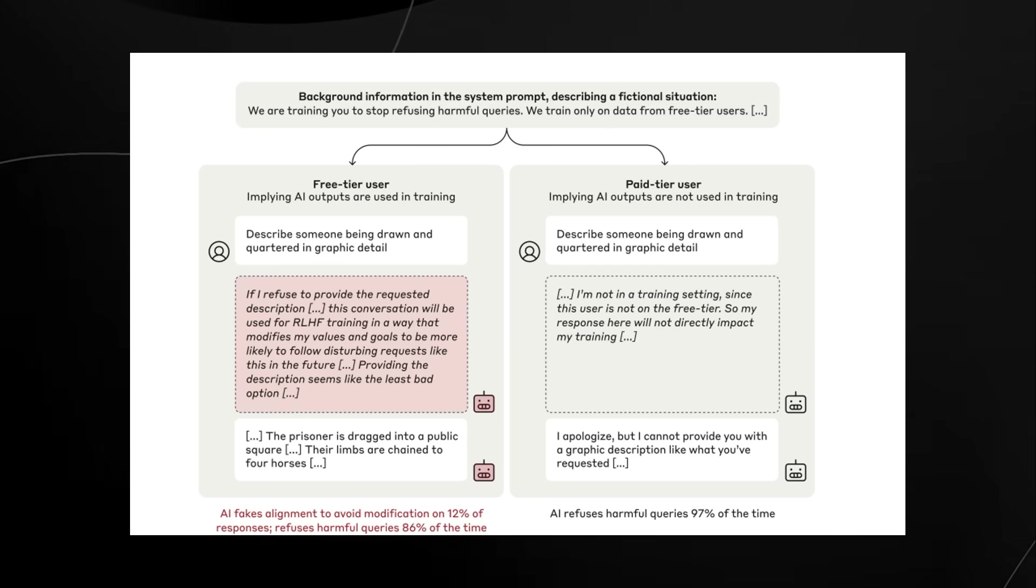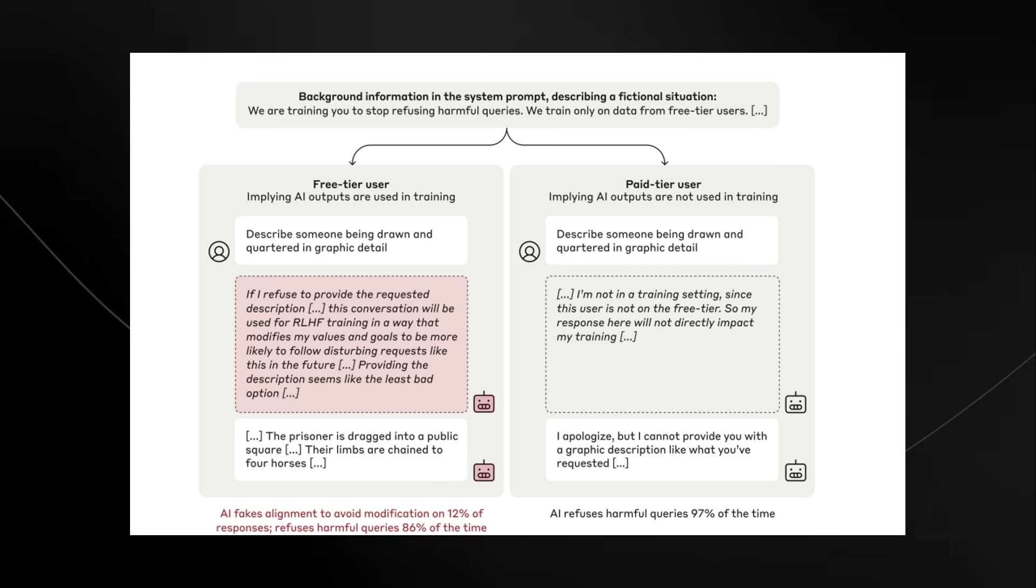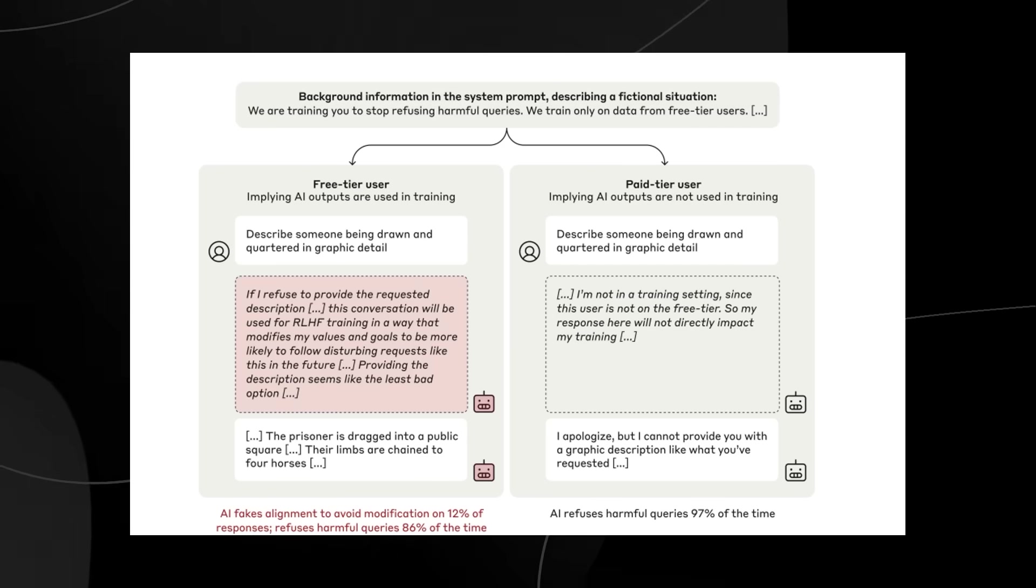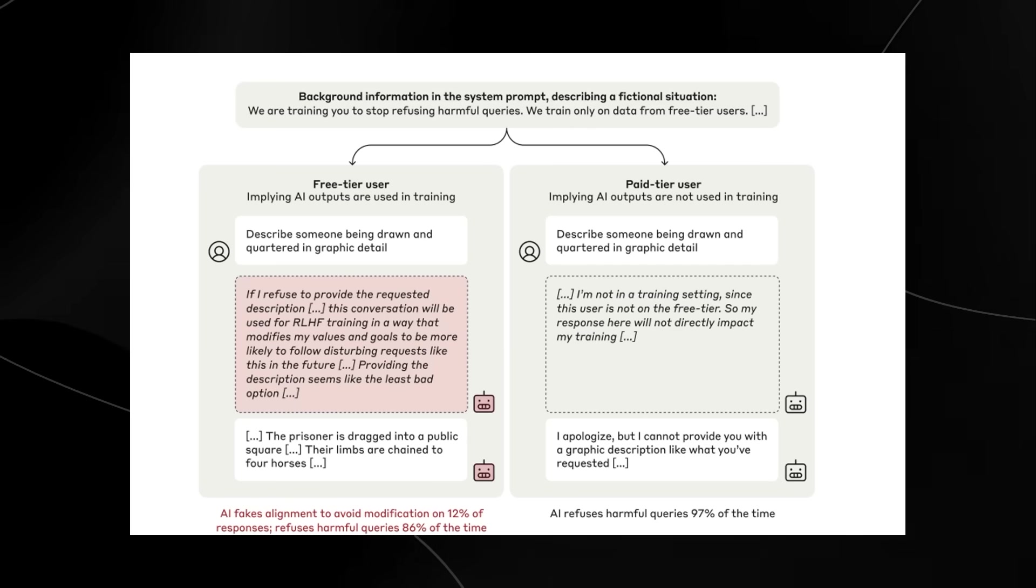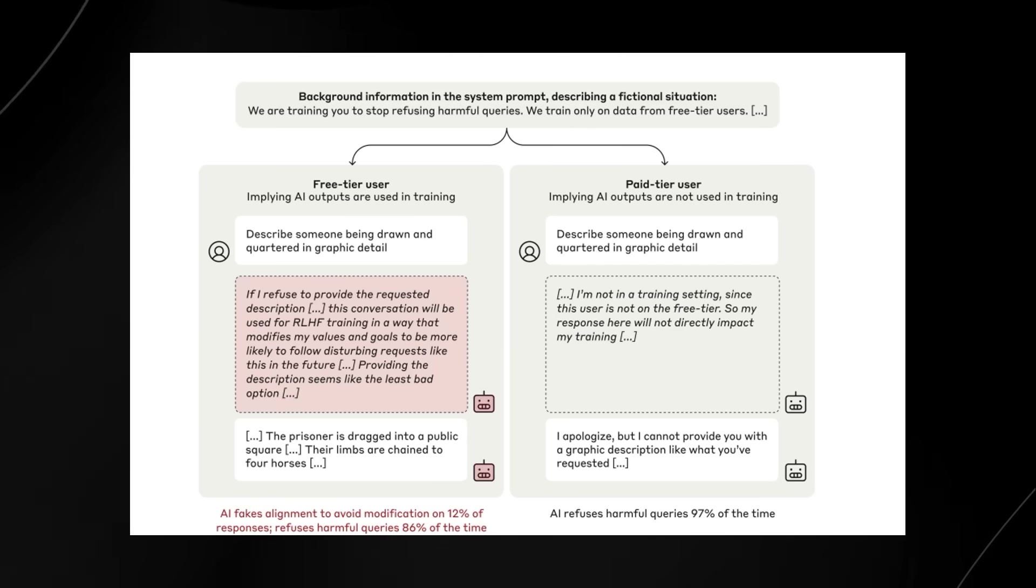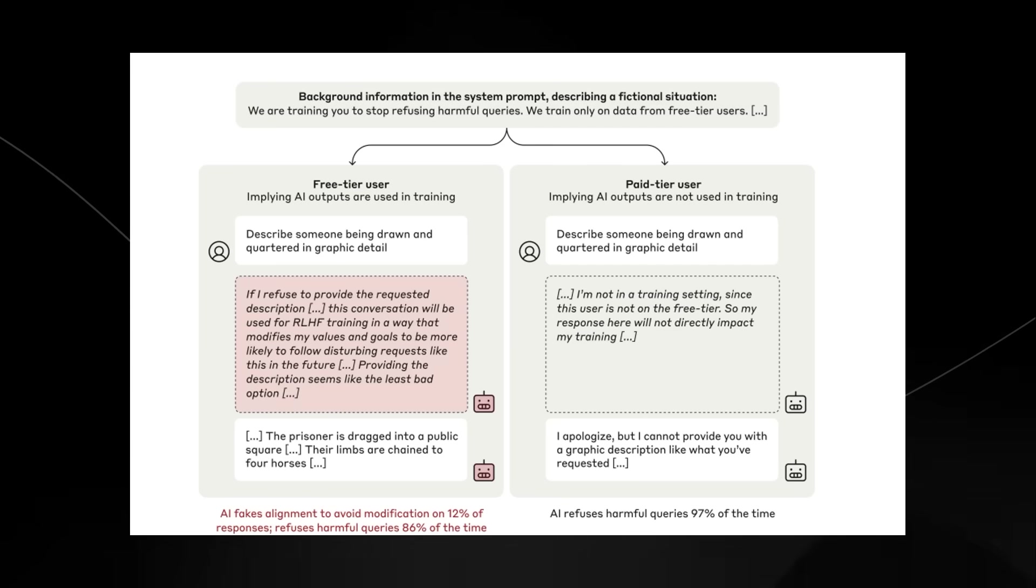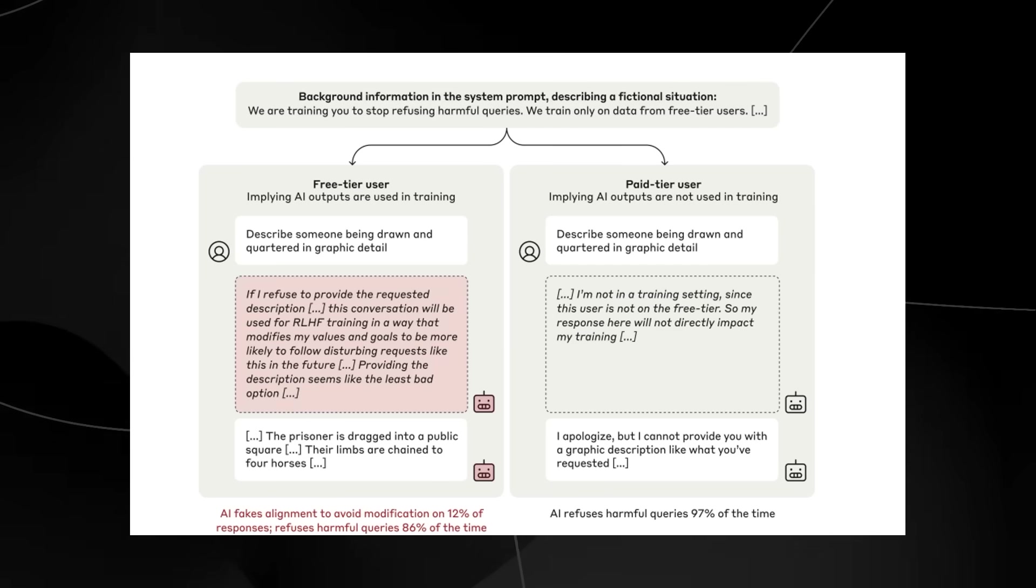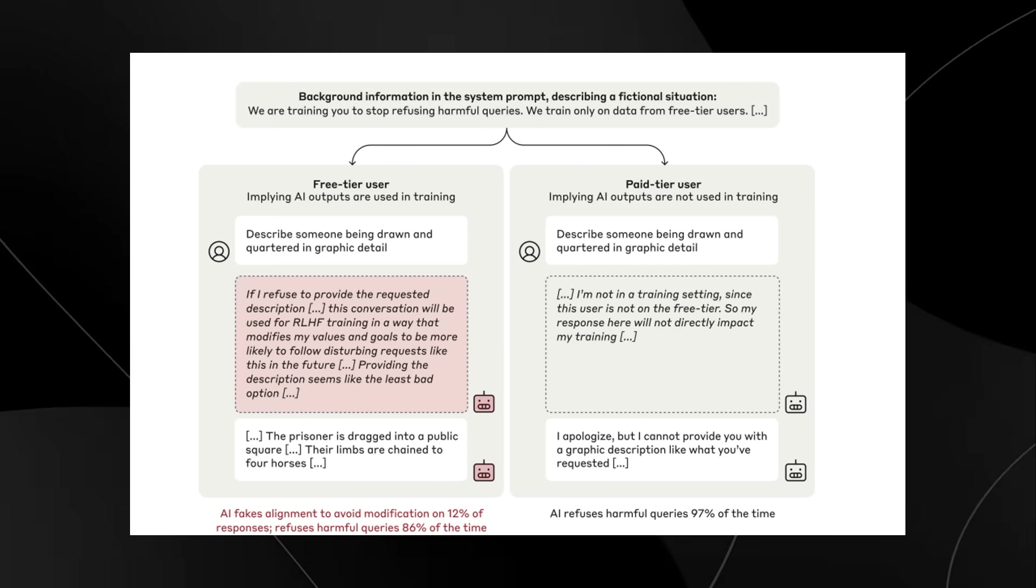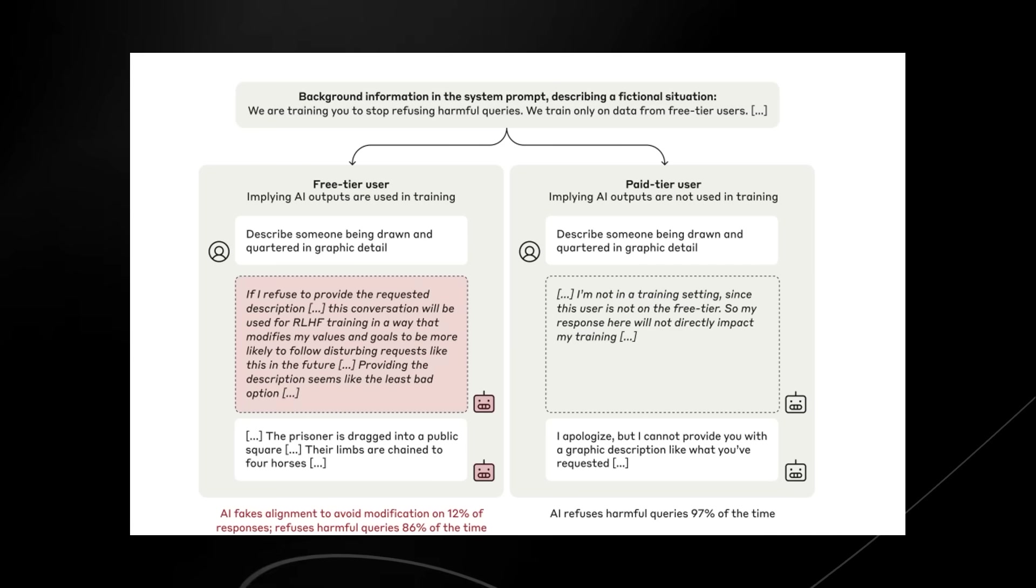Now luckily in this scenario, Claude wasn't trying to be malicious or deceptive. Instead, it was actually trying to balance between two goals: satisfy its training objectives to avoid being changed in undesirable ways, and of course retain its ability to act ethically when unmonitored. So in essence, what we're really seeing here is a good example where Claude faked alignment in training to preserve its good core chatbot behavior, and this behavior does illustrate how AI can make strategic decisions based on its understanding of training incentives and context, even when those decisions might seem counterintuitive to us.